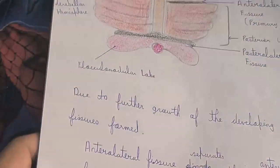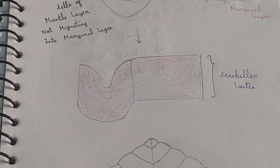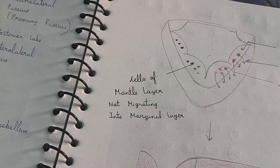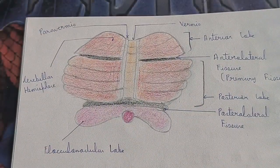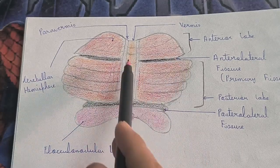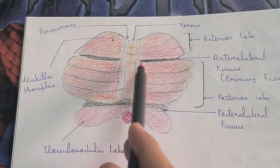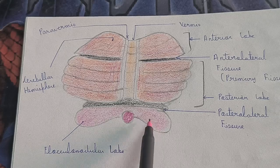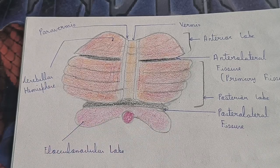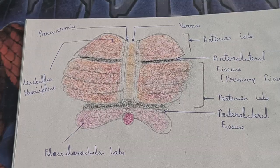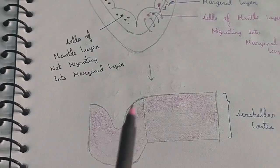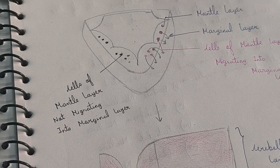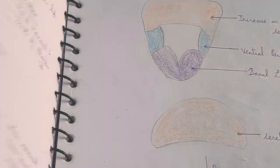The cerebellar cortex also gets divided into three layers: the molecular layer, the Purkinje layer, and the granular layer — all of which you will study in histology. In summary: the cerebellar hemispheres, vermis, and paravermis are all obtained from the extraventricular part; the flocculonodular lobe is obtained from the intraventricular part. The fissures form due to further growth of the developing cerebellum. The cerebellar cortex and all the deep nuclei form from the developing cells of the mantle layer. That's all about the development of the cerebellum.